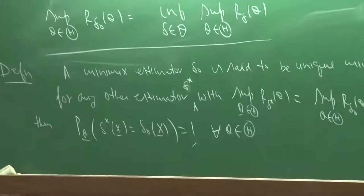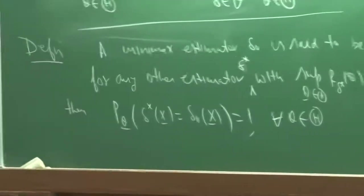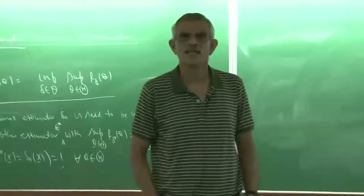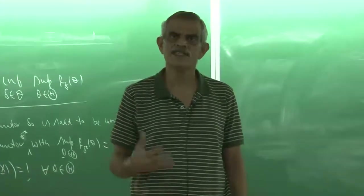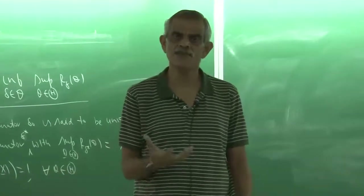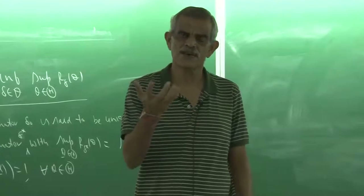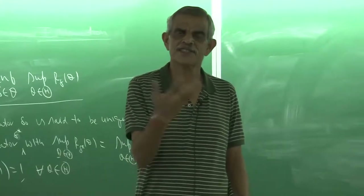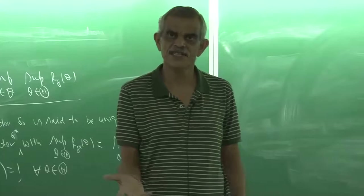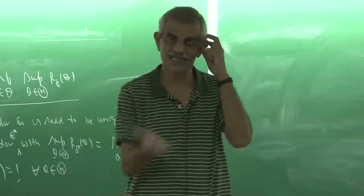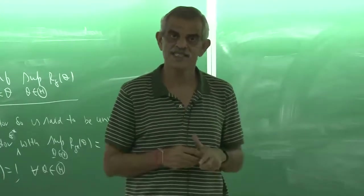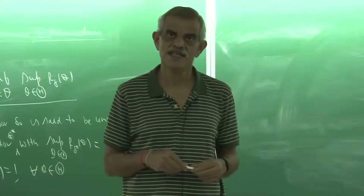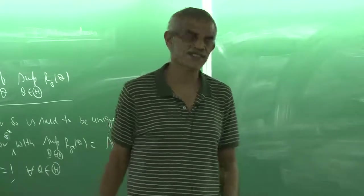Now, I know that the Bayes estimator minimizes the average risk, so its average risk is minimum. That means if the Bayes estimator has a constant risk, it looks like such an estimator would be Minimax, because the average is the same as the maximum risk. So it is also minimizing the maximum risk in a certain sense.